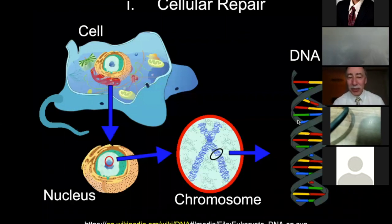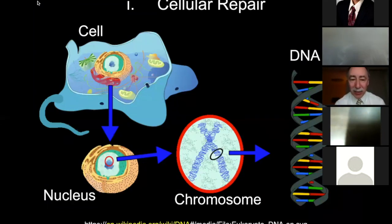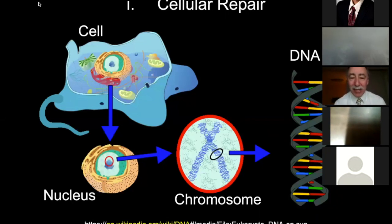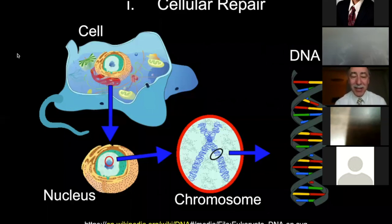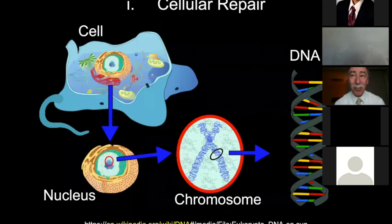Radiation is a random process, so everything in the cell is fair game. It mostly interacts with water, which is 80–90% of the cell, but also with lipids, proteins, and carbohydrates — those have little consequence because of cellular redundancy. However, 1% of the cell is DNA and RNA, and it's really the DNA that matters since there is only one double-stranded copy.